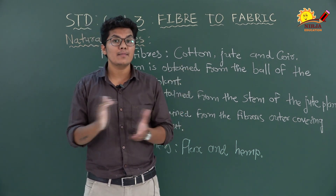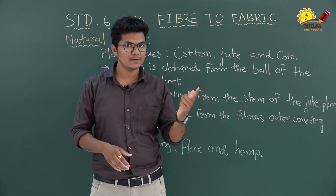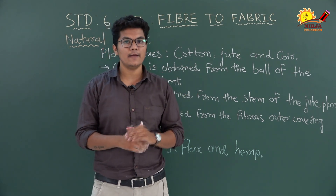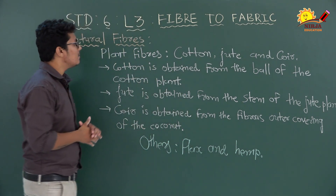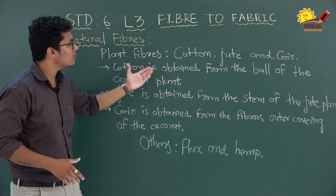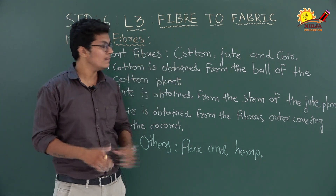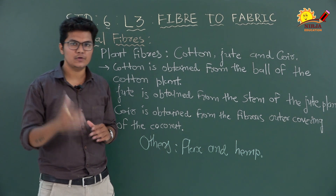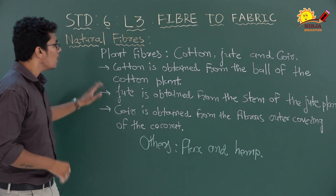Natural fibers come from plants and animals. The common plant fibers are cotton, jute, and coir — these are the most commonly used in our everyday life.